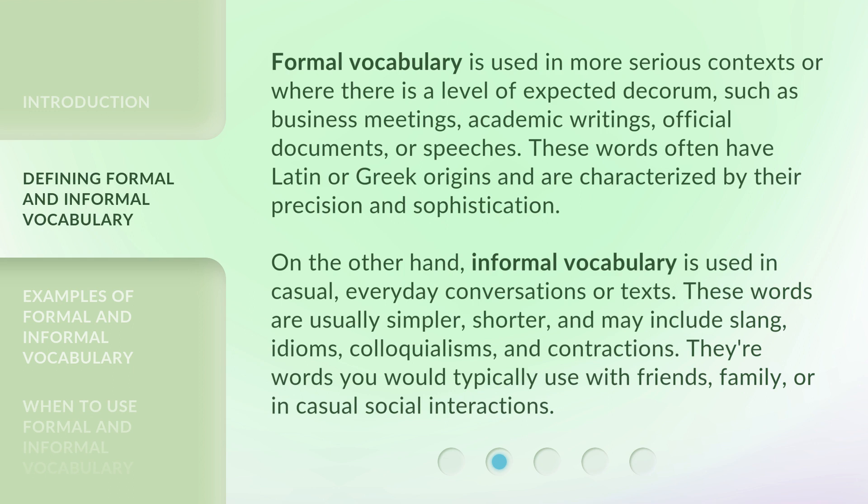On the other hand, informal vocabulary is used in casual, everyday conversations or texts. These words are usually simpler, shorter, and may include slang, idioms, colloquialisms, and contractions. They're words you would typically use with friends, family, or in casual social interactions.